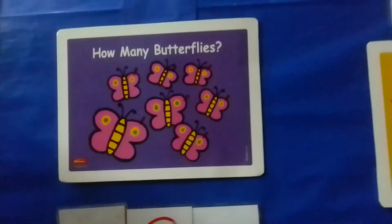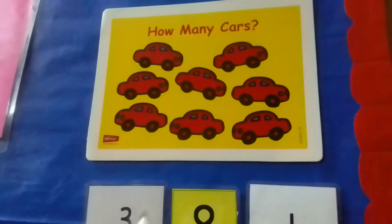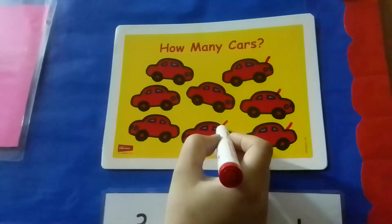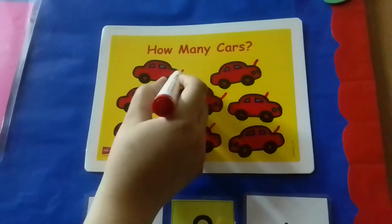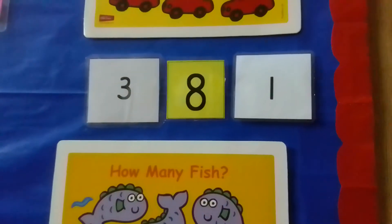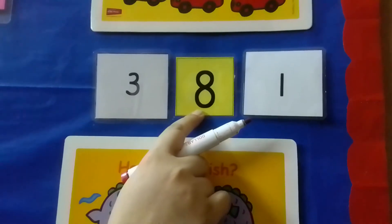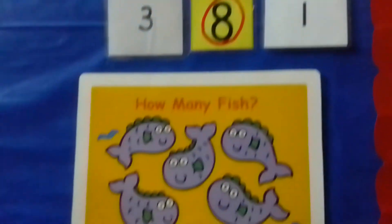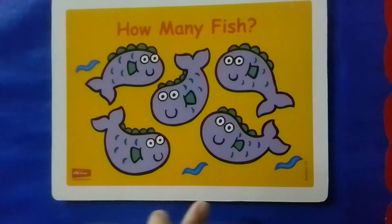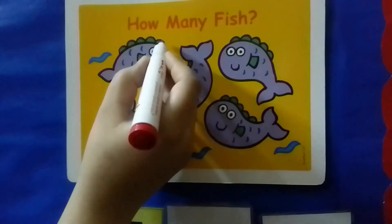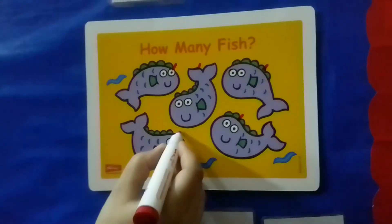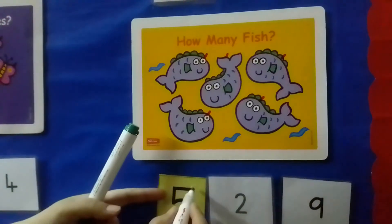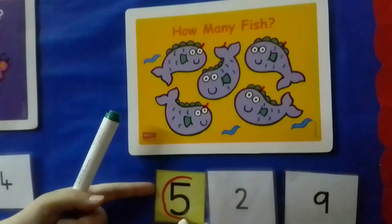Now please look at this side of the board and count the cars. Count and mark. One, two, three, four, five, six, seven, eight. Yes, these are eight cars. Circle the number eight here. Now what are these children? These are fish. Let's count the fish. One, two, three, four, five. Is this number five? No. Is this number five? No. Is this number five? Yes. Circle the number five here.